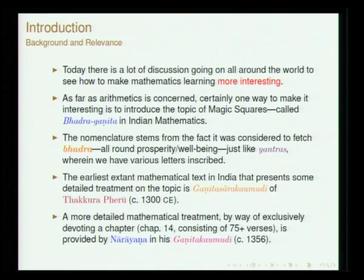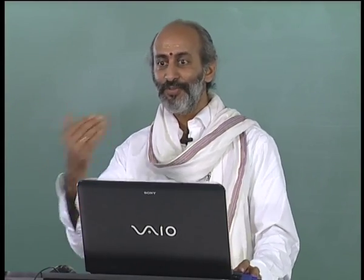As Narayana says, Bhadra Ganitam — in order to protect oneself among mathematicians, you can pose this question and if the other person is not able to answer, you save yourself. A detailed exposition of the mathematics of magic squares, their classification, and methods to construct them is found only in 13th–14th century texts. The earliest text is one of Takkara Peru called Ganitasara Kaumudi, and then Narayana Pandita's work is called Ganita Kaumudi.